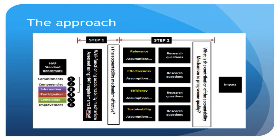We used that brainstorming as a basis to develop a framework which the research then followed. The first stage was to determine how effective or how well-functioning an accountability mechanism was. It's easy to say a mechanism exists and therefore it will have impact — but accountability mechanisms differ by an incredible amount. Different agencies have different approaches, and they need to be context specific. So there was an important first step of trying to understand the level of functioning of an accountability mechanism.